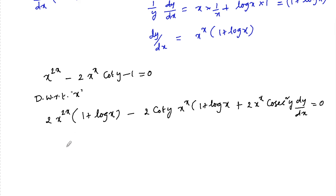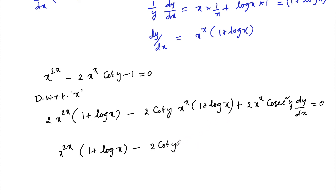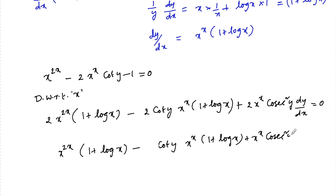So we can write: 2 into x to the power of 2x into 1 plus log x, minus 2 cot y into x to the power of x into 1 plus log x — taking 2 as common — plus x to the power of x into cosecant squared y times dy/dx equals 0.